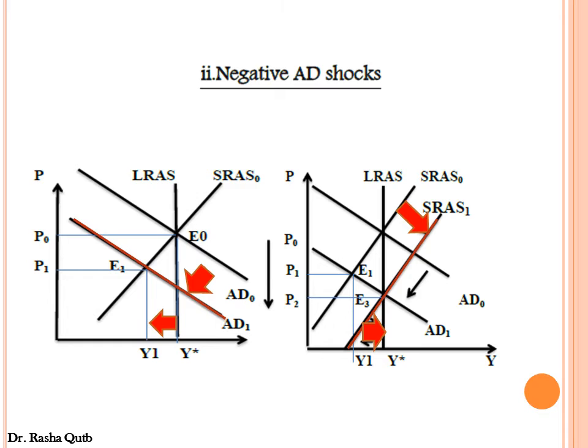In the long run, this negative aggregate demand shock closes the recessionary gap at a lower price with no effect on national income and no effect on the level of output, while there is a reduction in the price level.